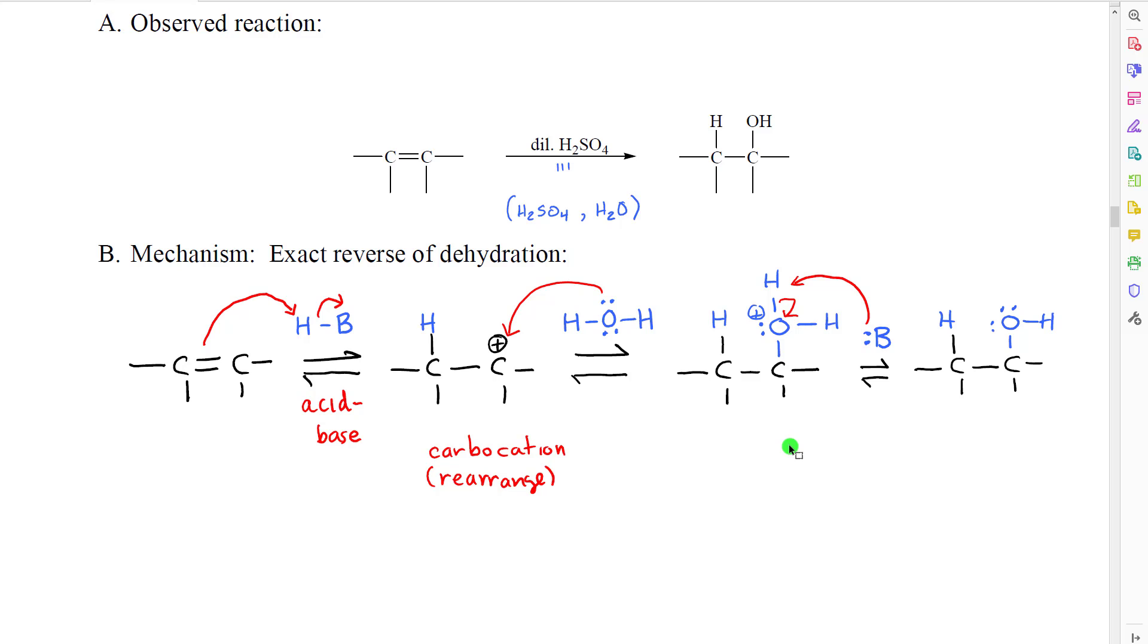Very much like we saw in the SN1 reaction, it's possible to essentially get rid of the formal charge by deprotonating, or removing a hydrogen, in an acid-base reaction. So a base will come over and make a bond to one of the hydrogens. The pair of electrons on the other side will go onto the oxygen, and that would give us our final product.